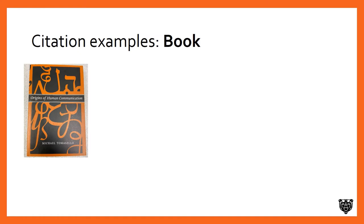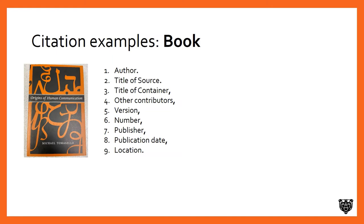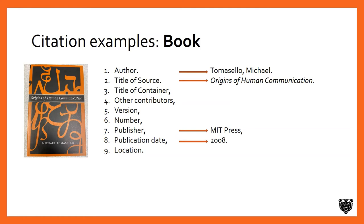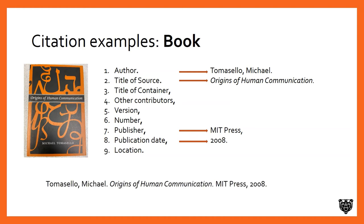Now let's turn to some citation examples. Here's an example of a book called The Origins of Human Communication by Michael Tomasello. We put up our elements in the MLA citation and then look through the bibliographic information, importing only the ones needed. In this case it's the author, the title of the source, the publisher, and the publication date. We string it all together and we have our MLA citation. Note that it is always last name before first name when writing the author's name.